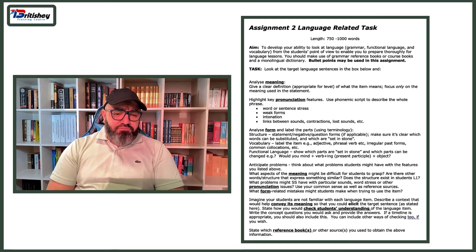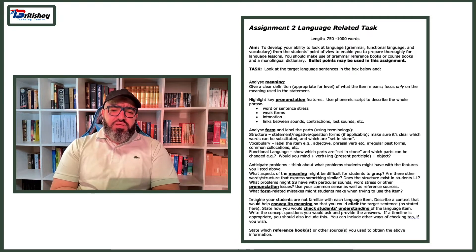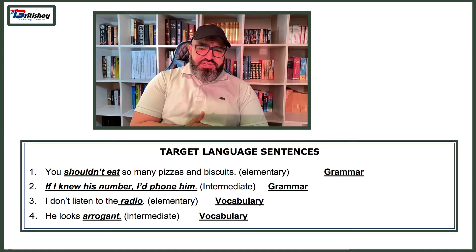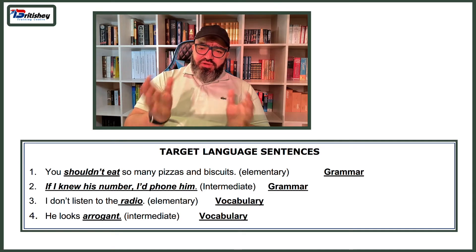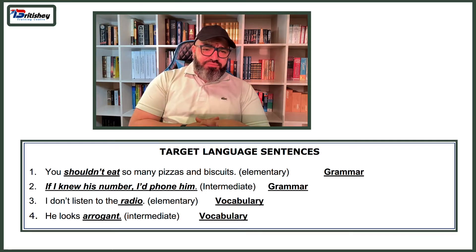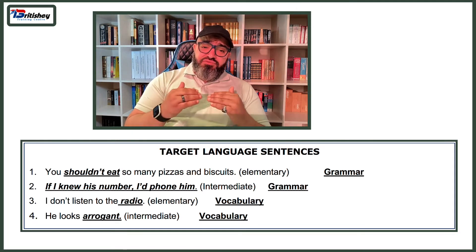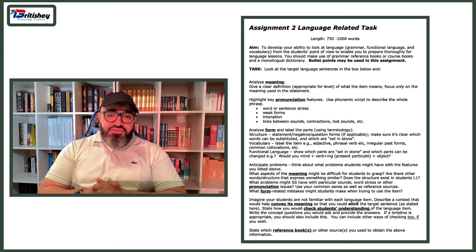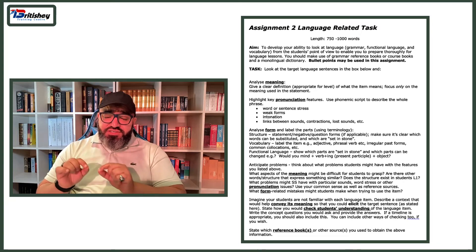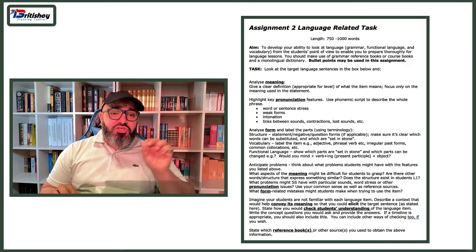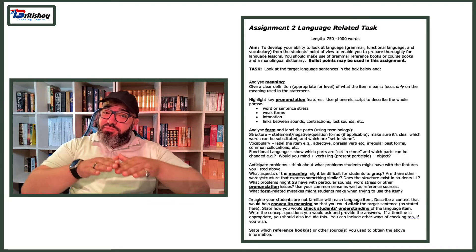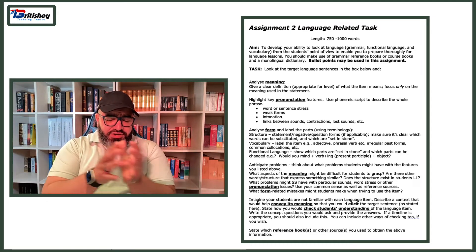The task says: look at the target language sentences in the box below. We notice that sentences one and two are about grammar, and sentences three and four are about vocabulary. Sentence one is for elementary level, the second for intermediate, the third elementary again, and the fourth intermediate. The first instruction is to analyze meaning — give a clear definition appropriate for the level of what the item means, focusing only on the meaning used in that statement.